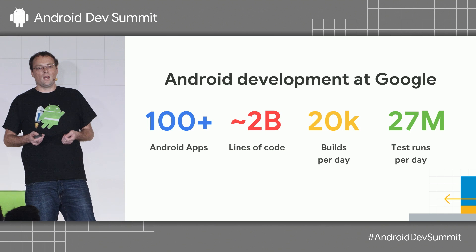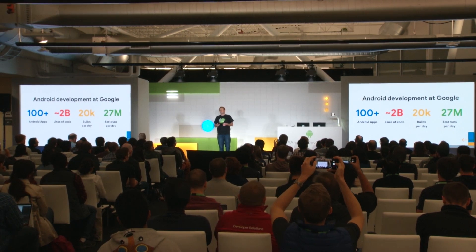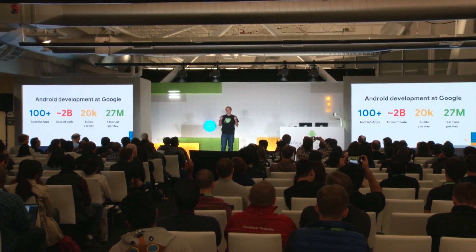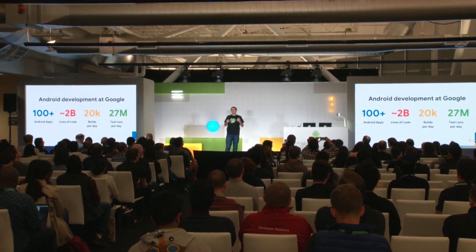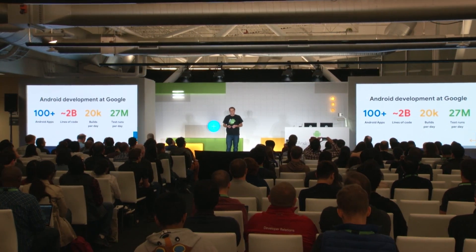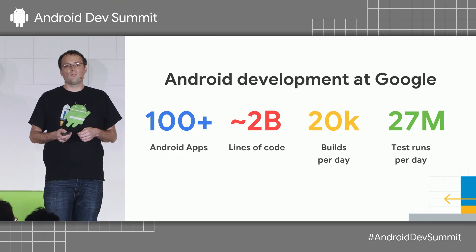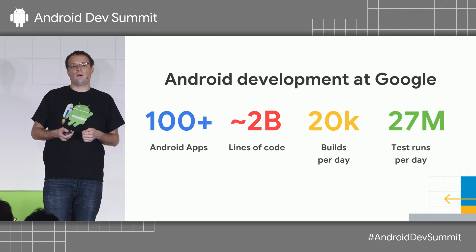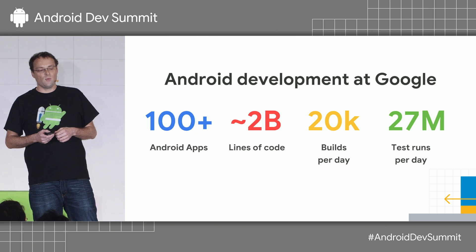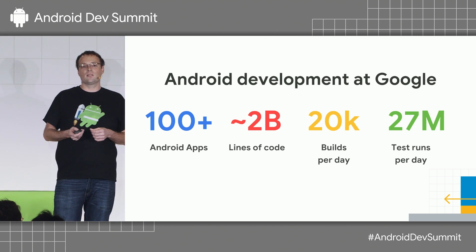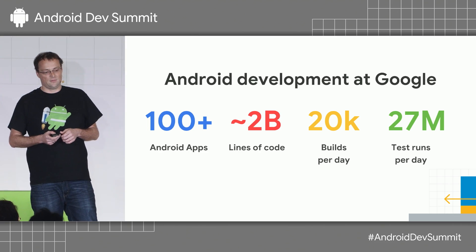We have about 100-plus Android apps. This includes all the built-in user apps such as Google Photos, Maps, YouTube, Gmail, and Search. We have a combined 2 billion lines of code, and we run 20,000 Android builds every single day. And we have a staggering 27 million test invocations per day.